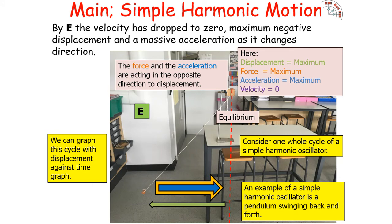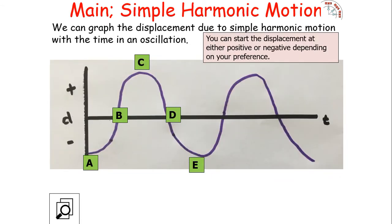We can graph this cycle with a displacement-against-time graph. We have points A, B, C, D, and E — where E is the start of the new cycle, the same position as point A. The displacement can start as either positive or negative depending on your preference. Unless stated in the problem, you can decide whether the initial displacement is positive or negative.